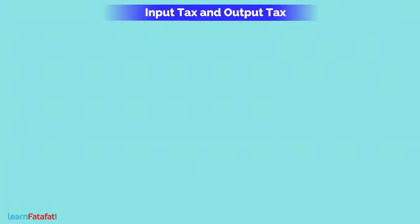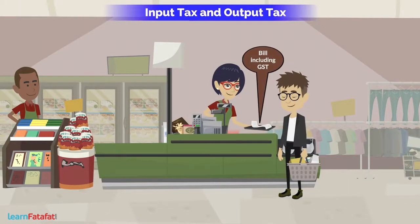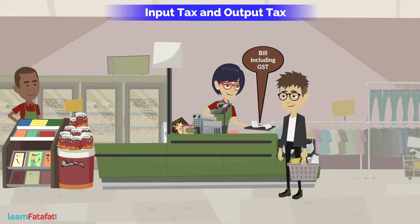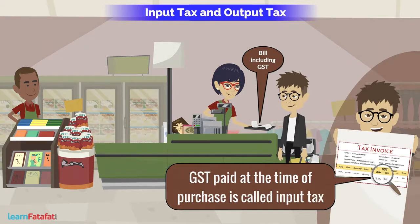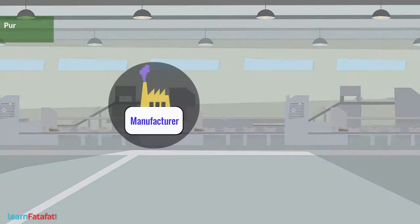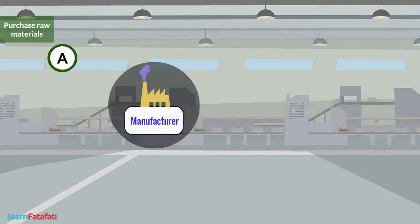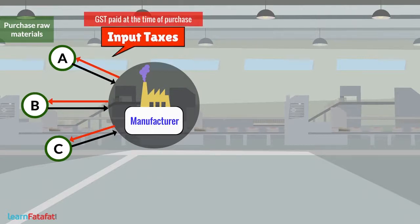Input Tax and Output Tax. When a trader purchases goods, he also pays GST. The GST paid at the time of purchase is called input tax. For example, a manufacturer purchases raw materials A, B, and C and pays input taxes of Rs.5, Rs.10, and Rs.15 respectively.